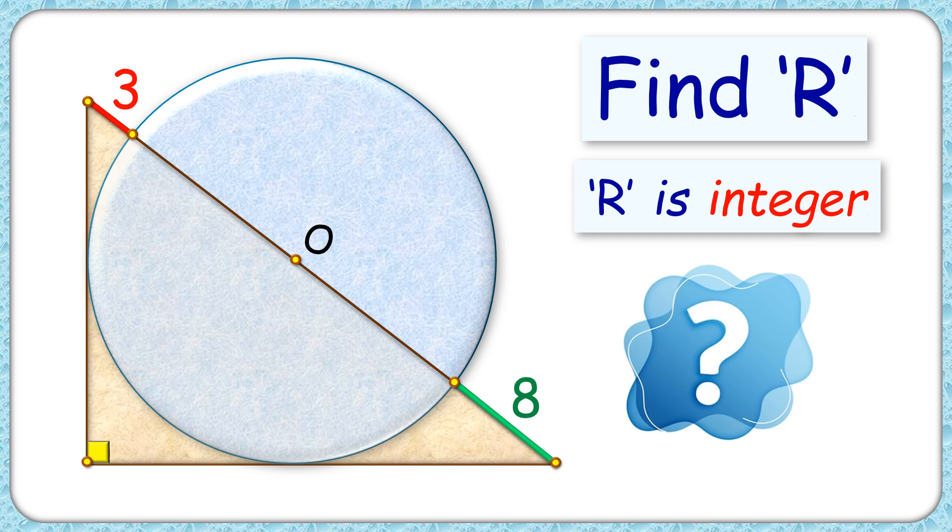In this interesting question we have a right angle triangle and a circle. The circle is touching the triangle at two of the sides and its center is lying on the hypotenuse.